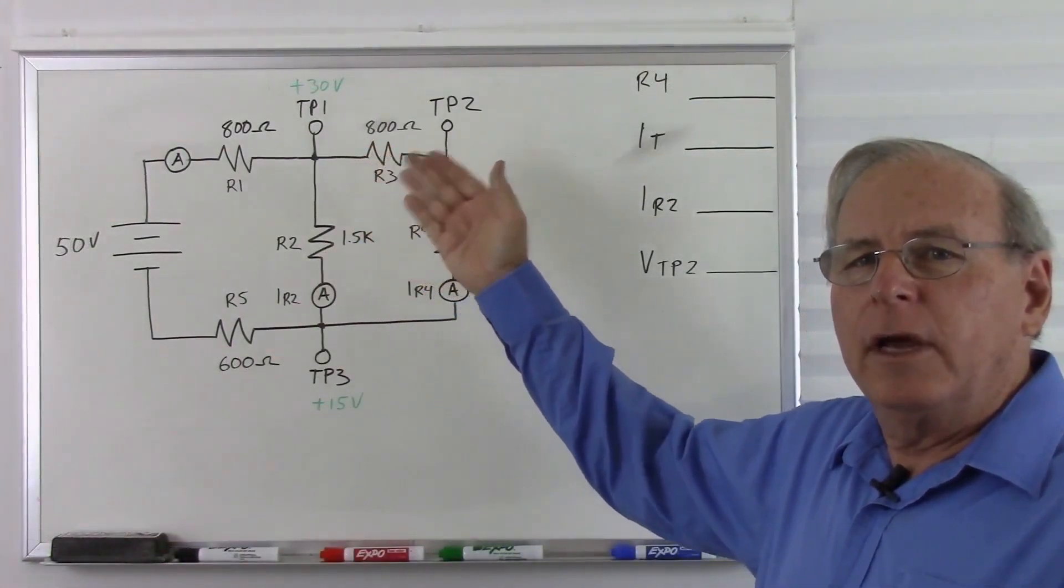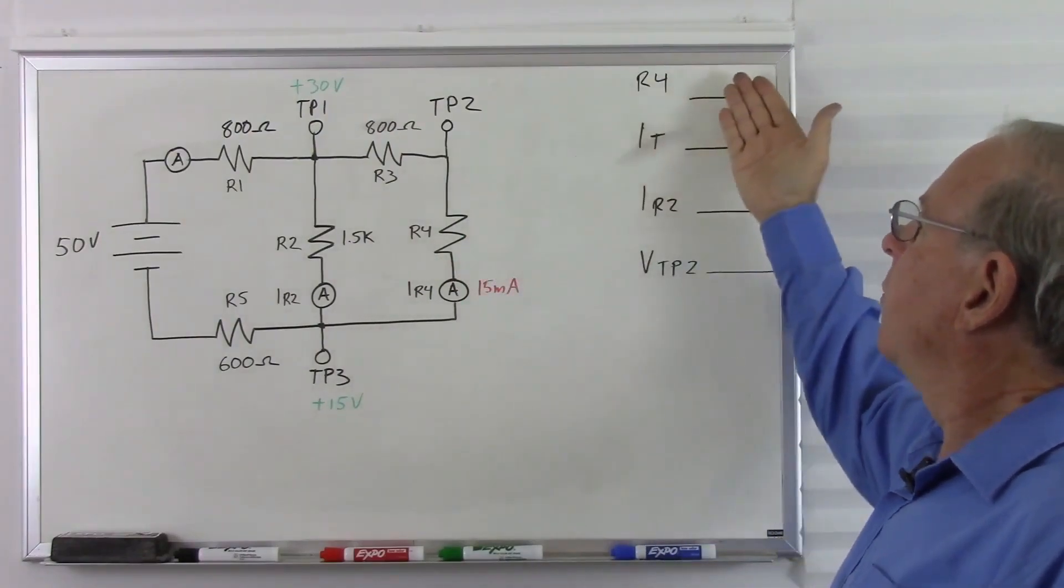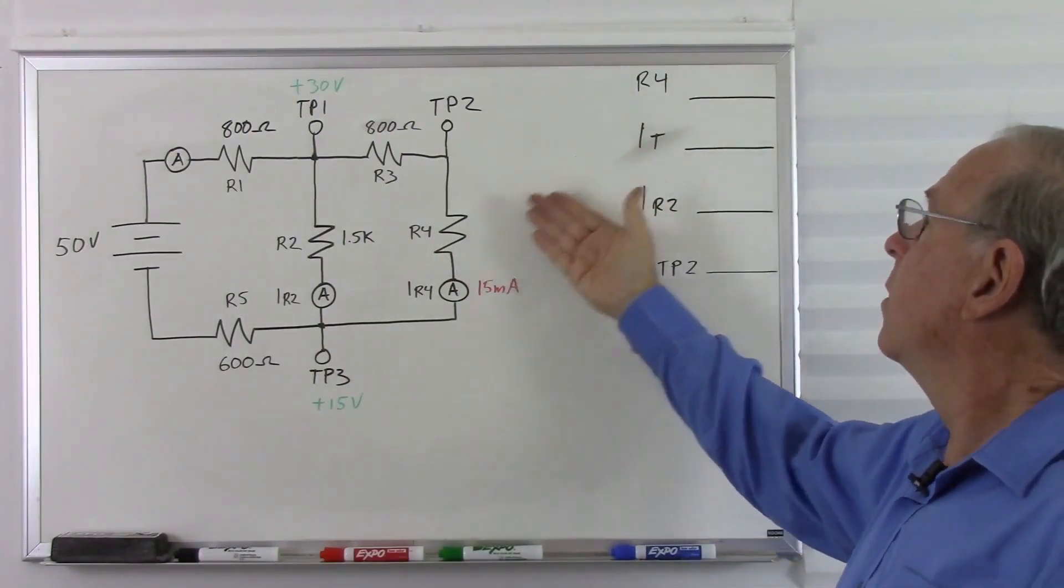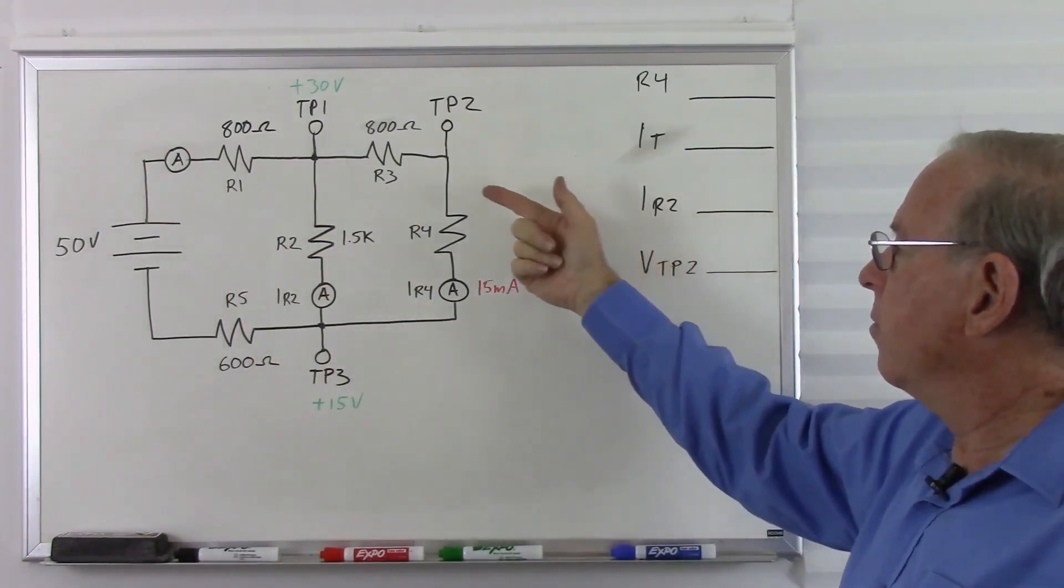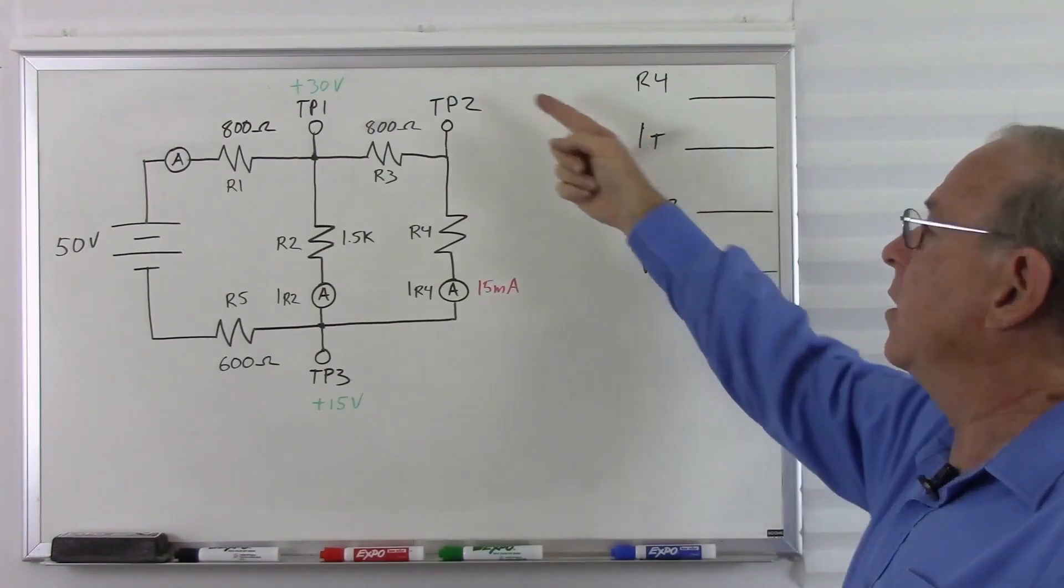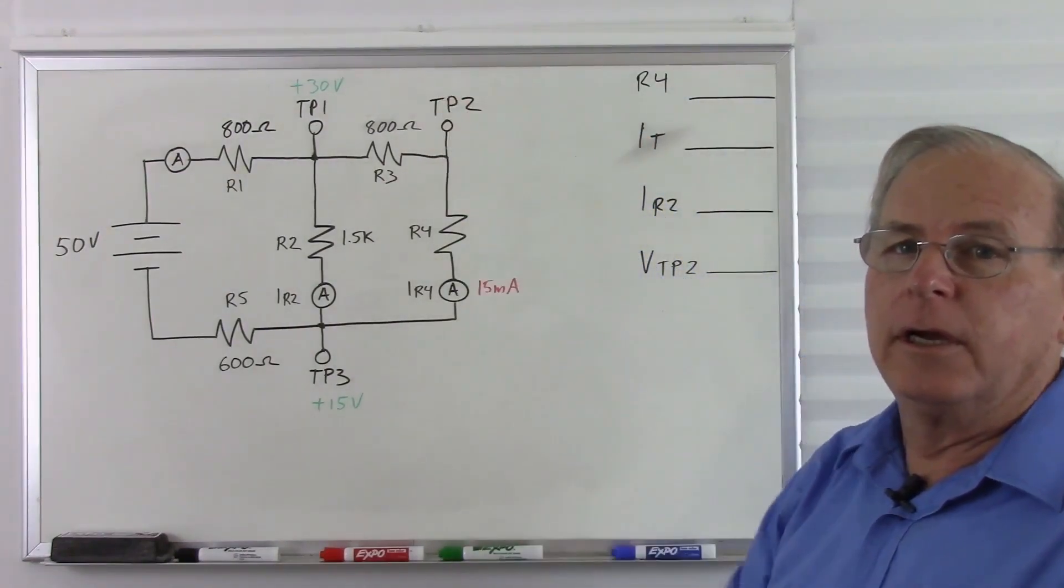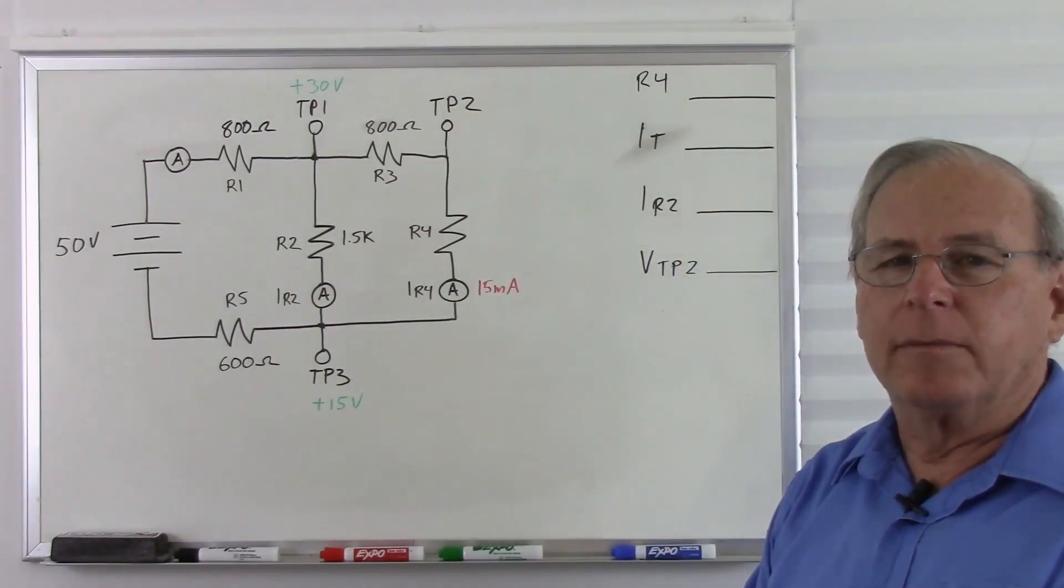Same configuration, but some different unknowns. We need to know the value of R4. The total current is missing. And the current through R2 is missing. And we are missing the voltage at test point 2. Pause the video and solve the problem.